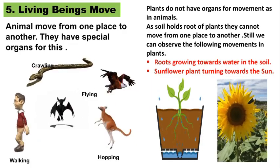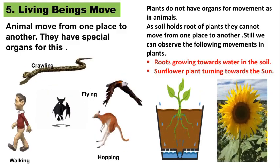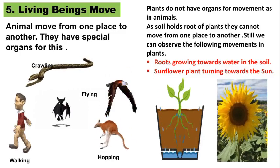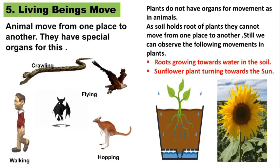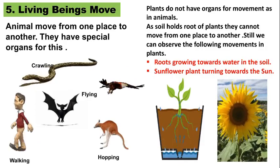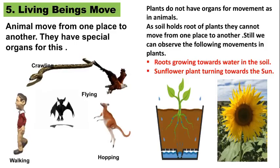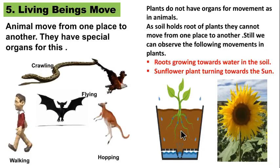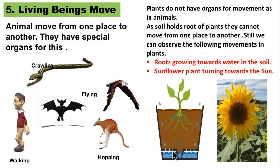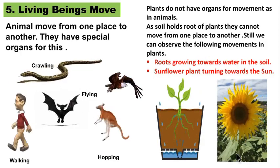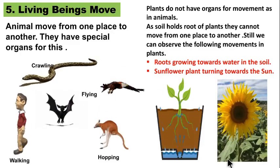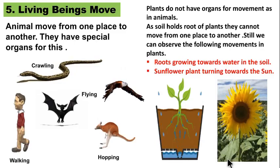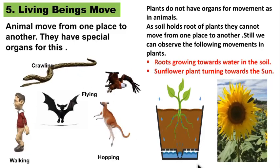In the case of plants, plants do not have organs for movement as animals do. But we can observe some movements in plants. Since soil holds the roots of plants, they cannot move from one place to another. Still, we can observe the following movements in plants: roots growing towards water in the soil, and sunflower plants turning towards the sun. By these movements, we can observe that living beings move.